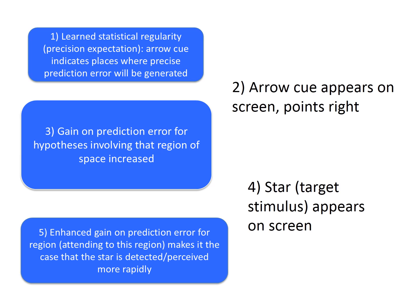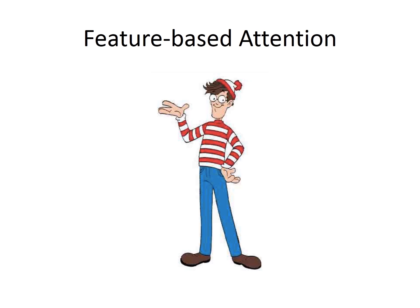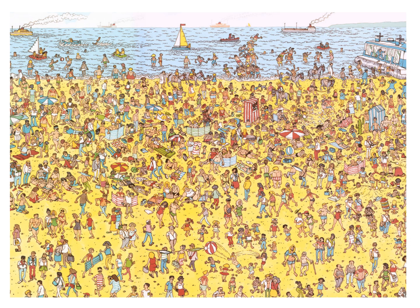How can we apply this account now to feature-based attention? Here's your endogenous featural cue. I'm going to show you a scene in which Waldo appears. Your job is to find him. If you're like me, his most salient feature is his red and white striped sweater, and so you're going to look for him by expecting this feature. The red and white striped items in this picture likely jumped out at you, in a way that you might describe as driving or capturing your attention. What's the PC story here?